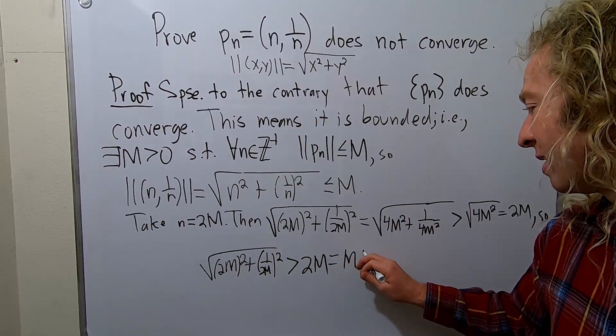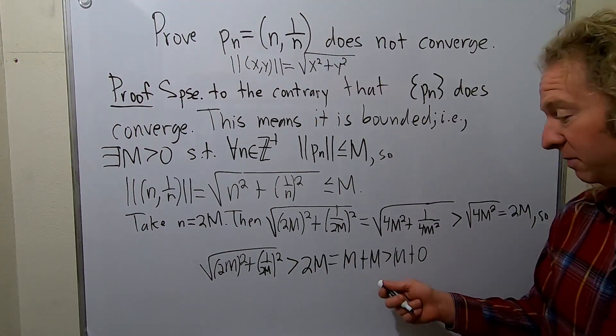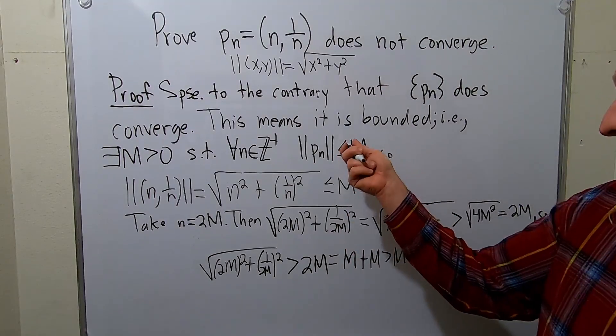But if you're not convinced, you could write it as m plus m. And that's bigger than m plus 0. Totally proven, right? Because big m is bigger than 0, right? Here it is right there.